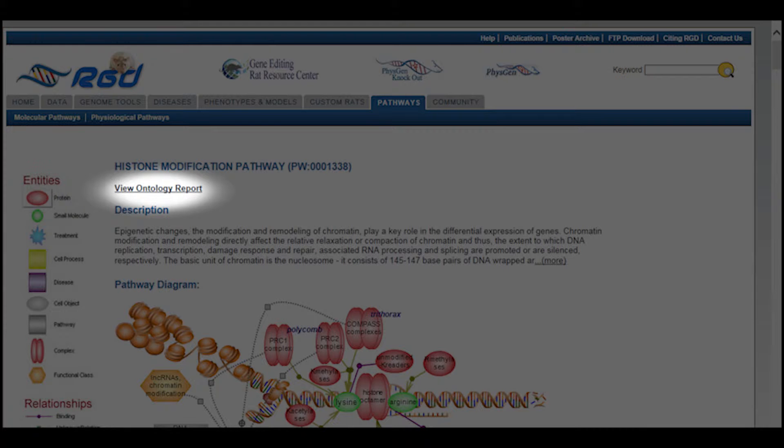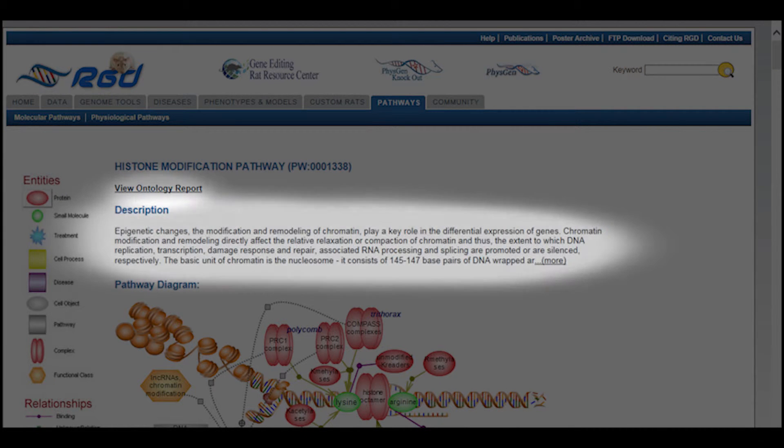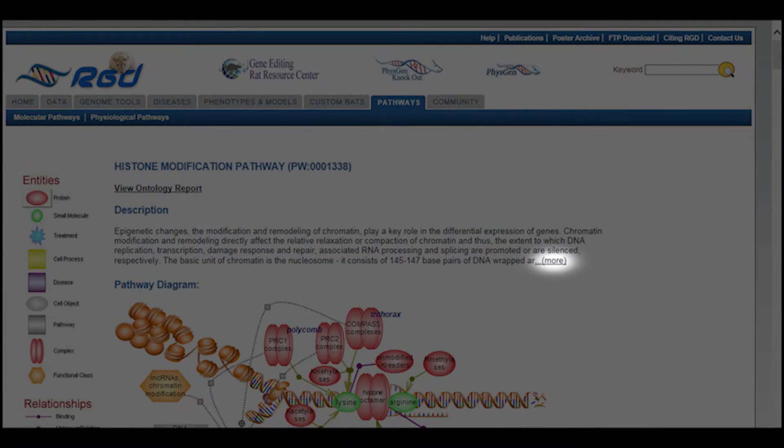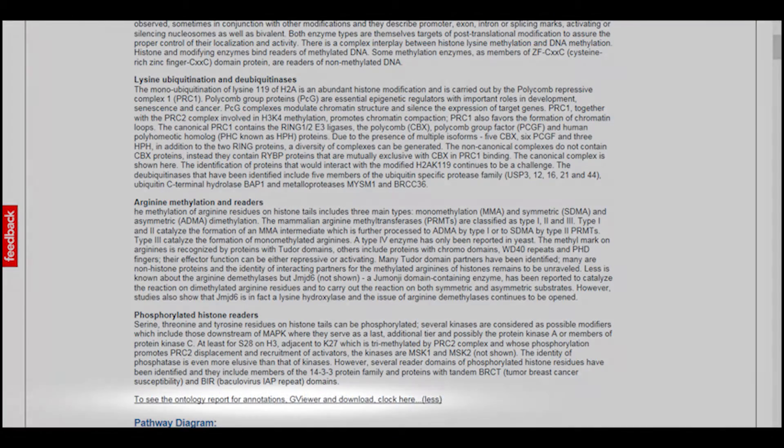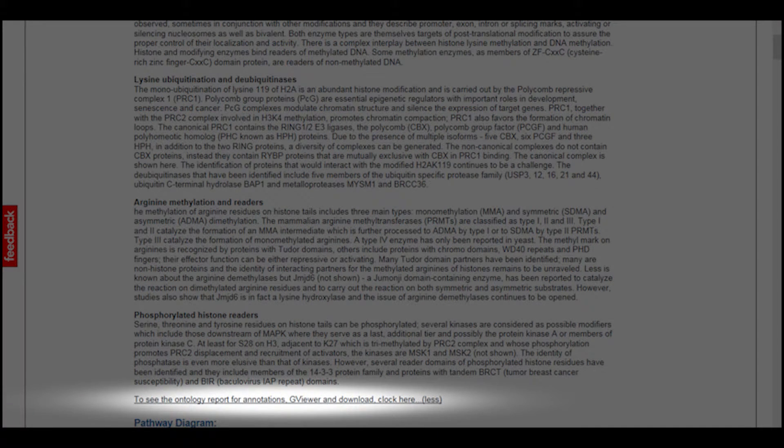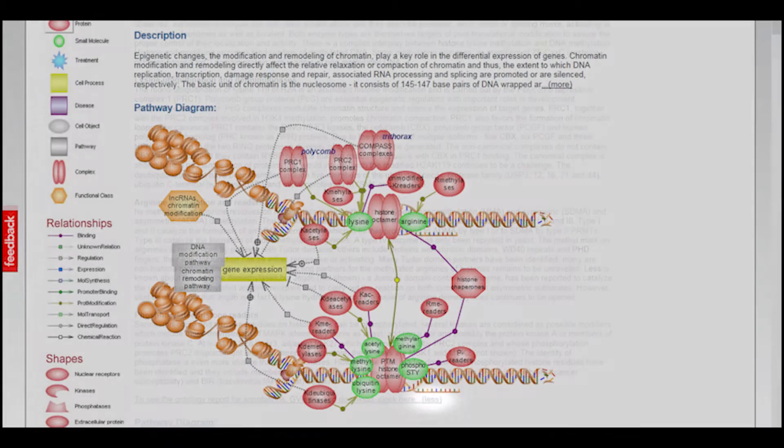Below the ontology report link on the diagram page is a description for the pathway diagram, detailing its various components and interactions. Click on more to see the entire description. At the end of the description, there is another link to the ontology report page for that pathway term. Click less to hide the bulk of the description.